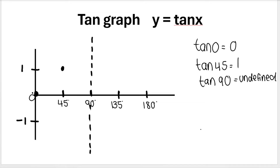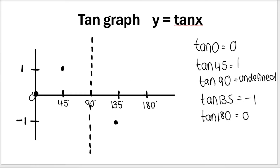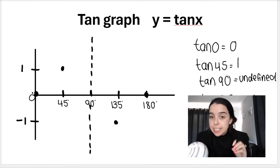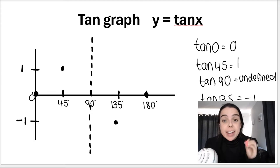My next x value is 135. Type in tan of 135 — you get negative 1. So plot that on the graph: tan 135, negative 1, put a dot. Then we're going to do tan of 180, and we get 0. Please remember that I'm only plotting from 0 to 180 because in this particular question, that is my domain.